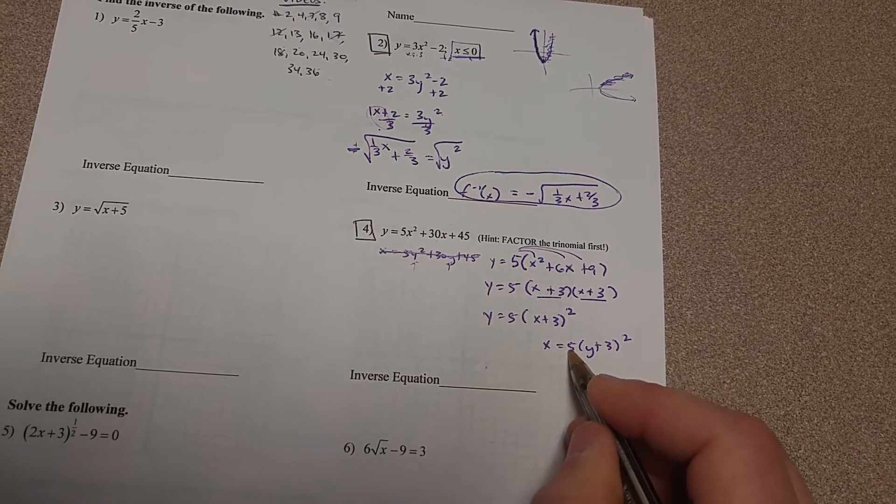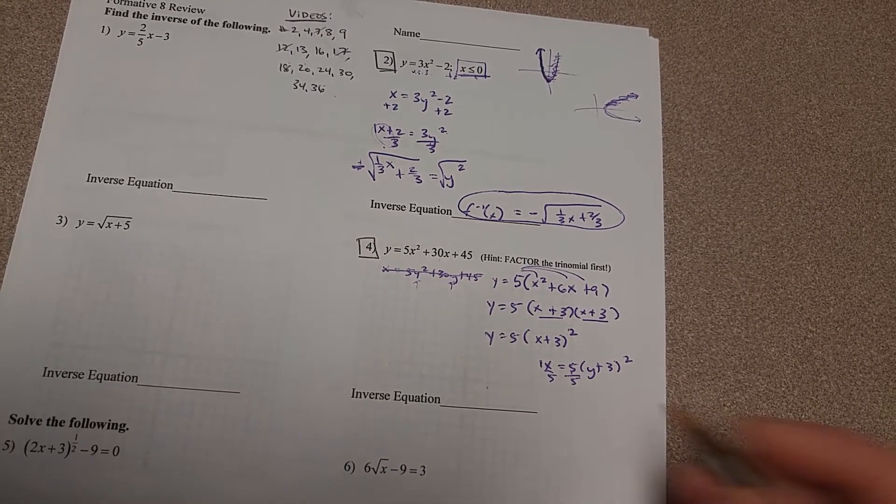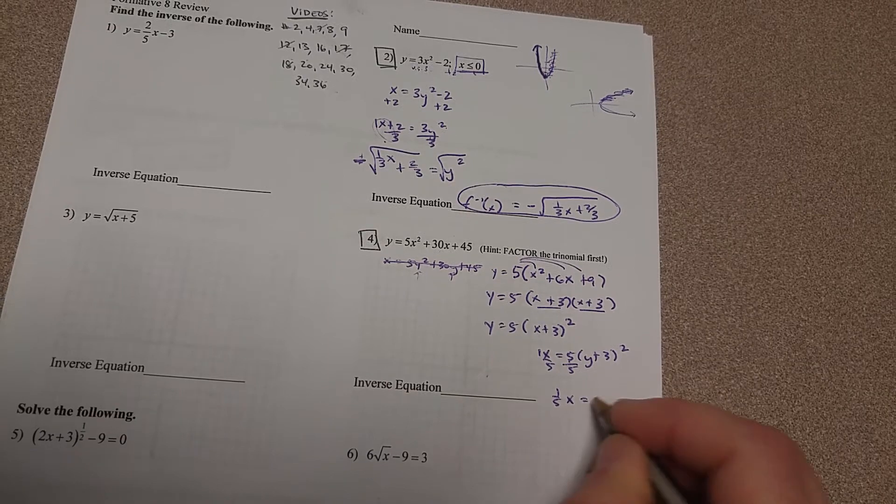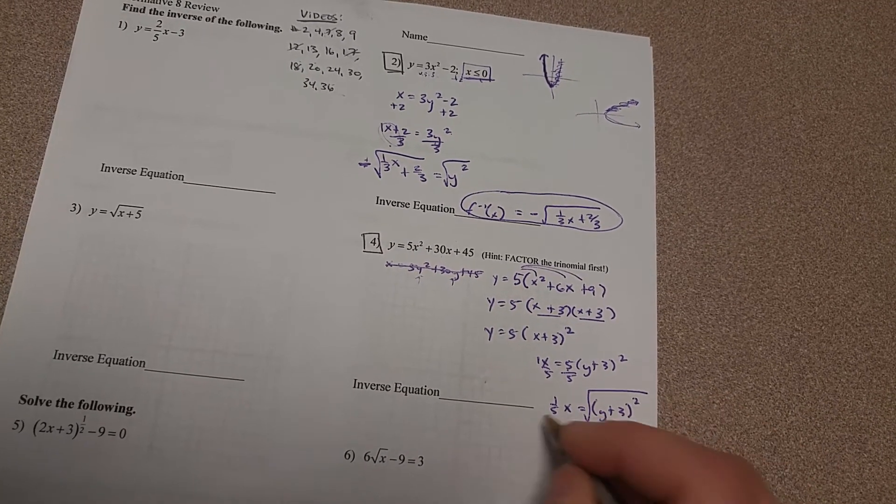Now to solve this, I need to get rid of the 5 first. So I'm going to divide by 5. So there's a ninja one there. So this is 1/5 x equals y plus 3 squared. Now I'm going to square root it.